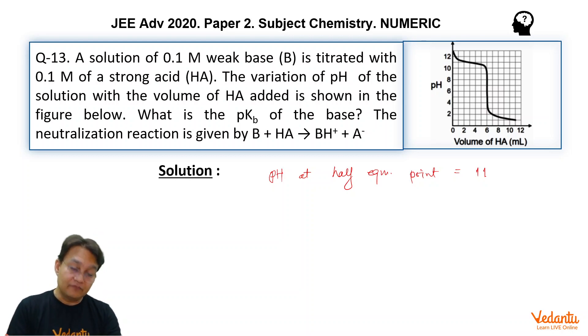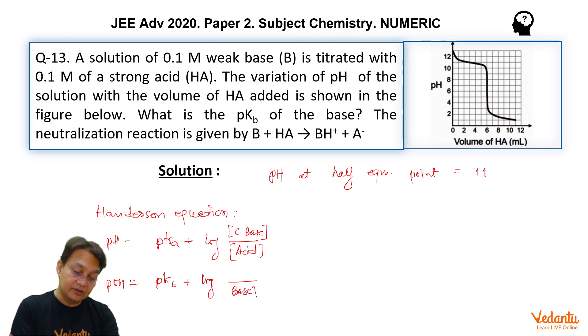The crux of this problem is how to approach this problem. You can approach this problem by using Henderson equation for buffer. Since the graph is against pH versus volume of HA, it makes sense that we can use the first equation.